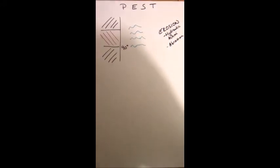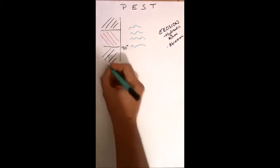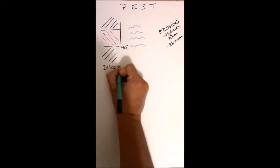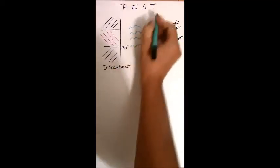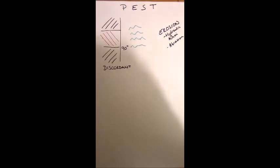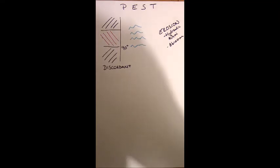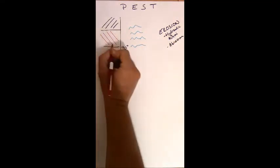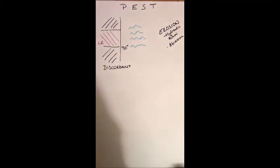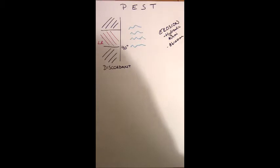Headlands and bays form at something that we call a discordant coastline. Really key terminology here, thinking back to that T. What we mean by discordant coastline is that the bands of rock, the bedrock geology, is at 90 degrees to the sea.